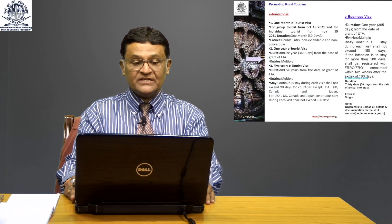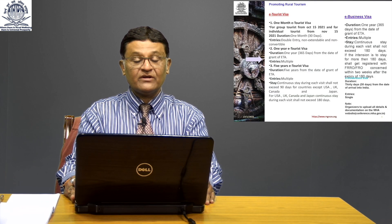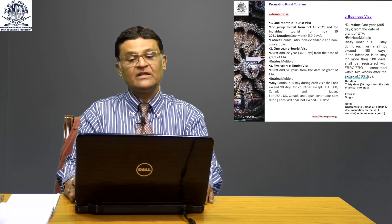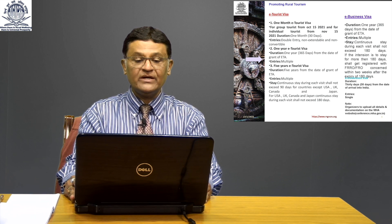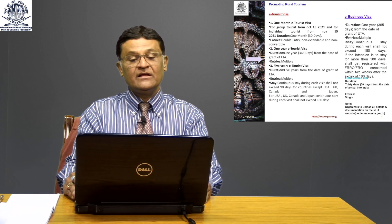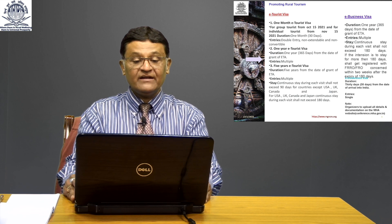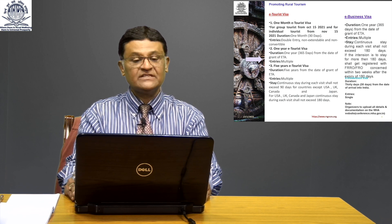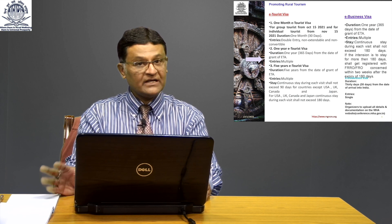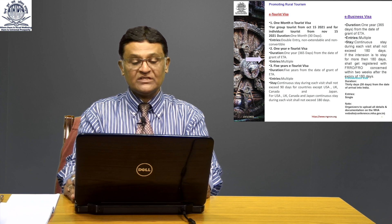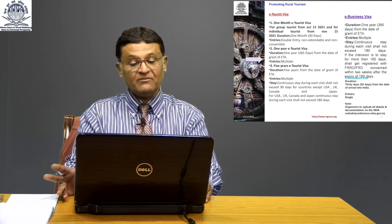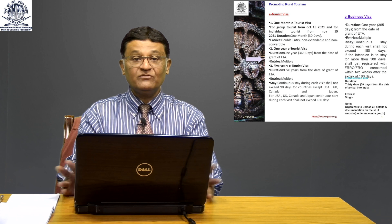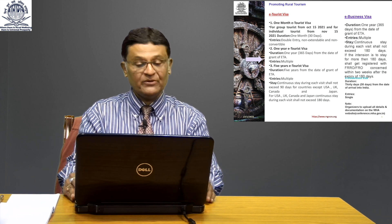To recap the E-Tourist visa: the one-month E-Tourist visa for group tourists from 15th October and individual tourists from November 2021 is 30 days, double entry, non-extendable and non-convertible. The one year E-Tourist visa is 365 days with multiple entries — you can come multiple times within the period.